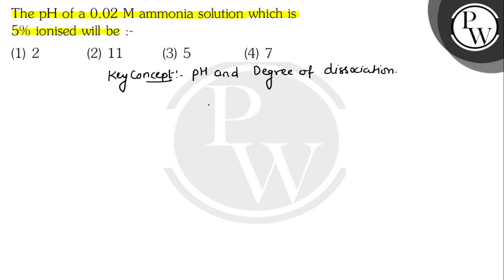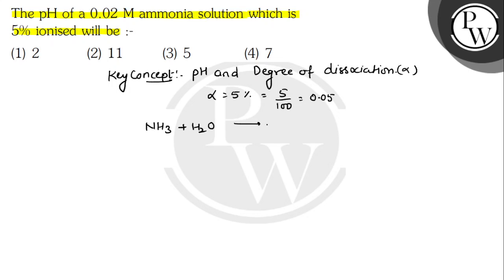Clear है? तो यहाँ से देखें — हमें degree of dissociation, जिसको alpha भी लिख सकते हैं, उसका value दिया हुआ कितना? 5%, which is 5 divided by 100, यानि कि 0.05. Clear है? और concentration का value दिया हुआ है 0.02.